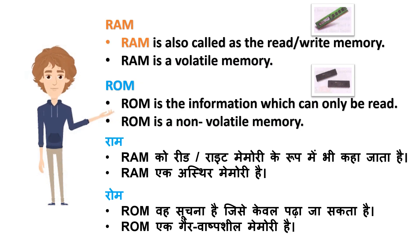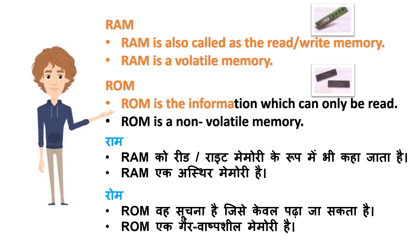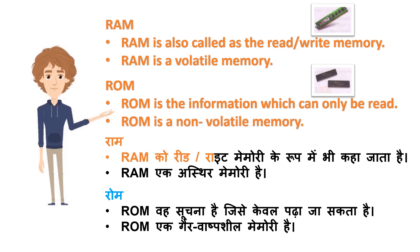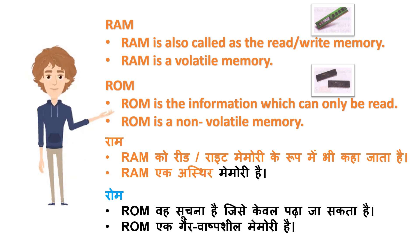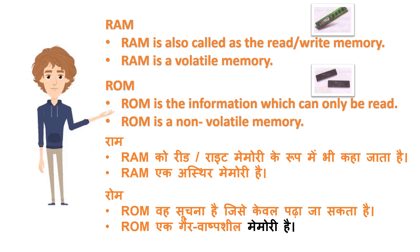RAM is also called the read/write memory. RAM is a volatile memory. ROM is the information which can only be read. ROM is a non-volatile memory. RAM ko read/write memory ke roope mein bhi kaha jata hai. RAM ek asthir memory hai. ROM ek non-volatile memory hai.